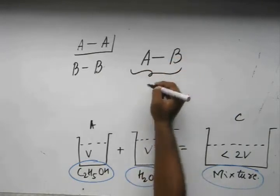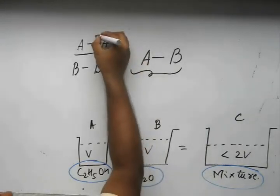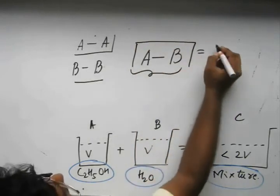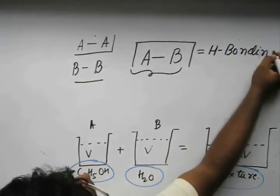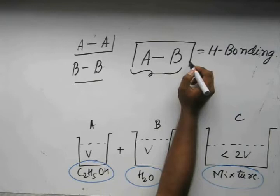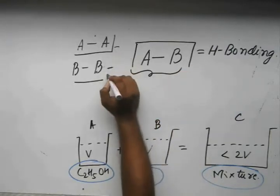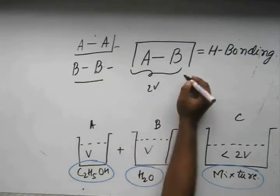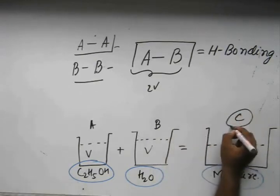So what is this interaction? This is again hydrogen bonding, but a more stronger hydrogen bonding in this case. So the volume of this and this when added gives 2V, but the resultant volume that we actually get in container C is less than 2V because of this magical hydrogen bonding.